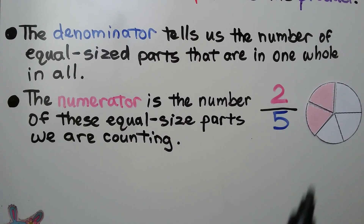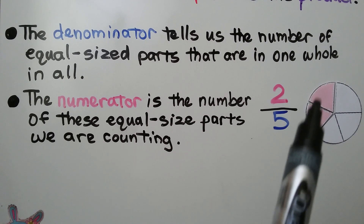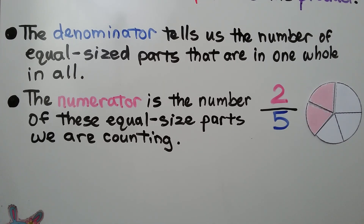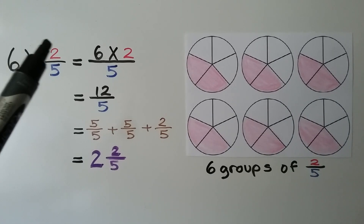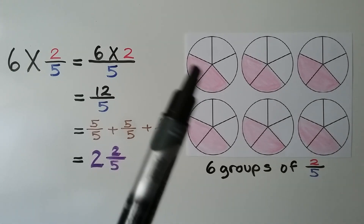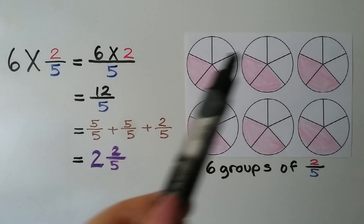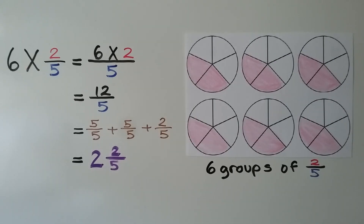Here, one whole is split into 5 equal parts — our denominator is 5, we are counting 2 of them, it's 2 fifths. Two of the 5 equal parts are shaded. Six times 2 fifths is equal to 6 times 2 over the denominator 5. We have 6 whole, and we have 2 fifths shaded in each circle.